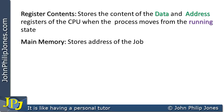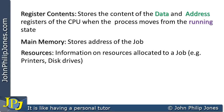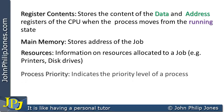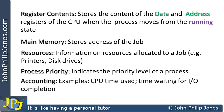The main memory field is straightforward — it stores the address of the job in RAM. The resources field stores information on resources allocated to a job, for example which printer is allocated or whether a disk drive is being used. The process priority field indicates the priority of a job — if a higher priority process wants to execute, the operating system can stop the lower priority one. The accounting field contains performance measurement information such as CPU time used and time spent waiting for I/O completion.